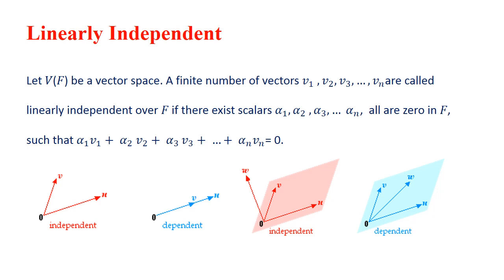In the graph, it is clearly visible that these two vectors U and V are independent. Also in the plane, all three vectors shown are independent.